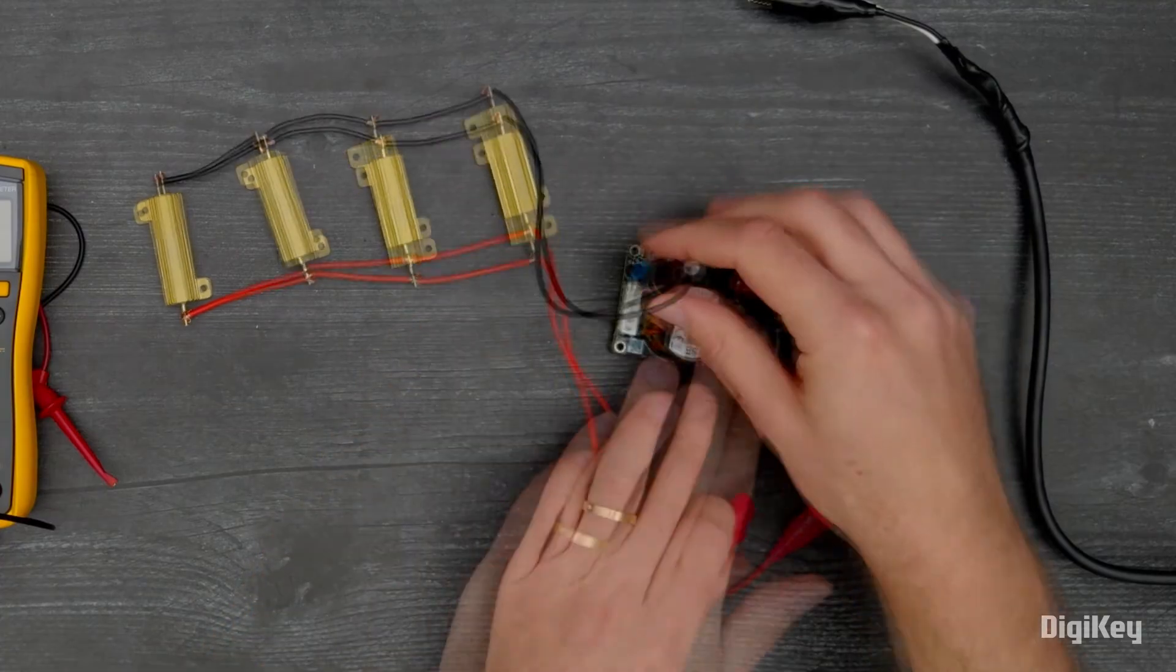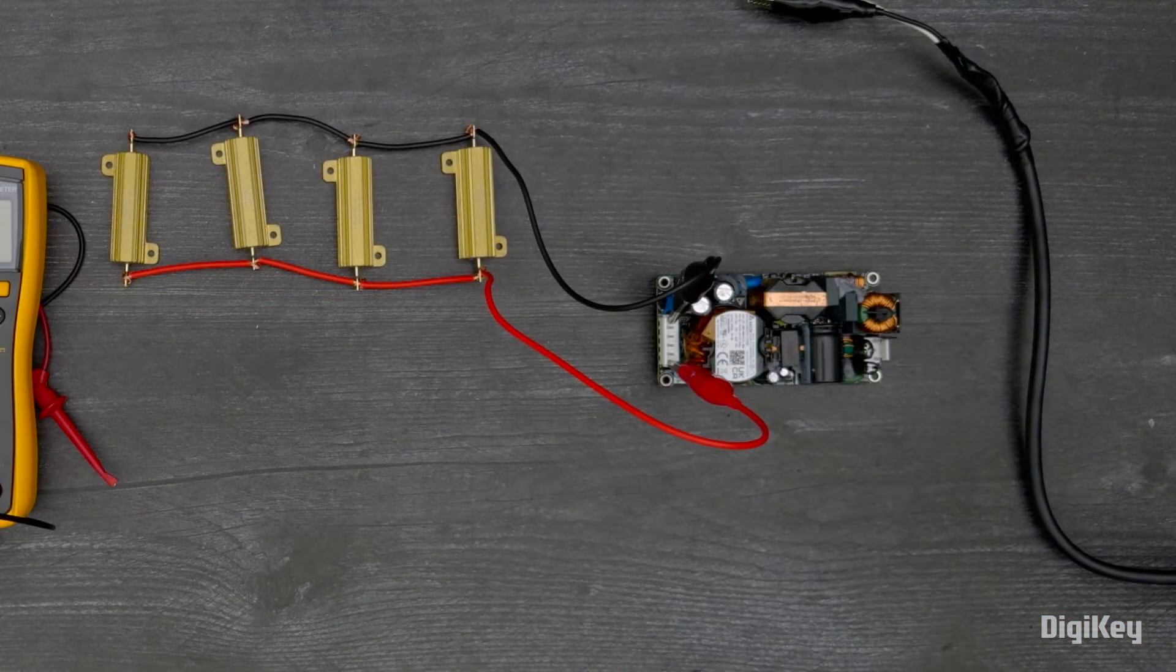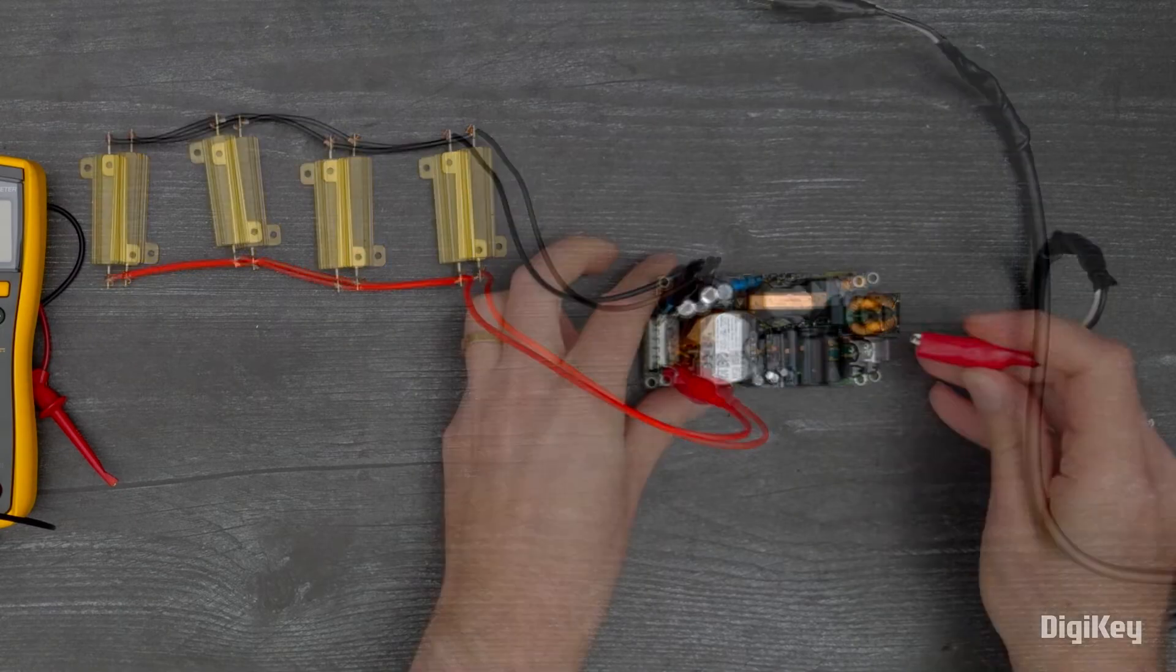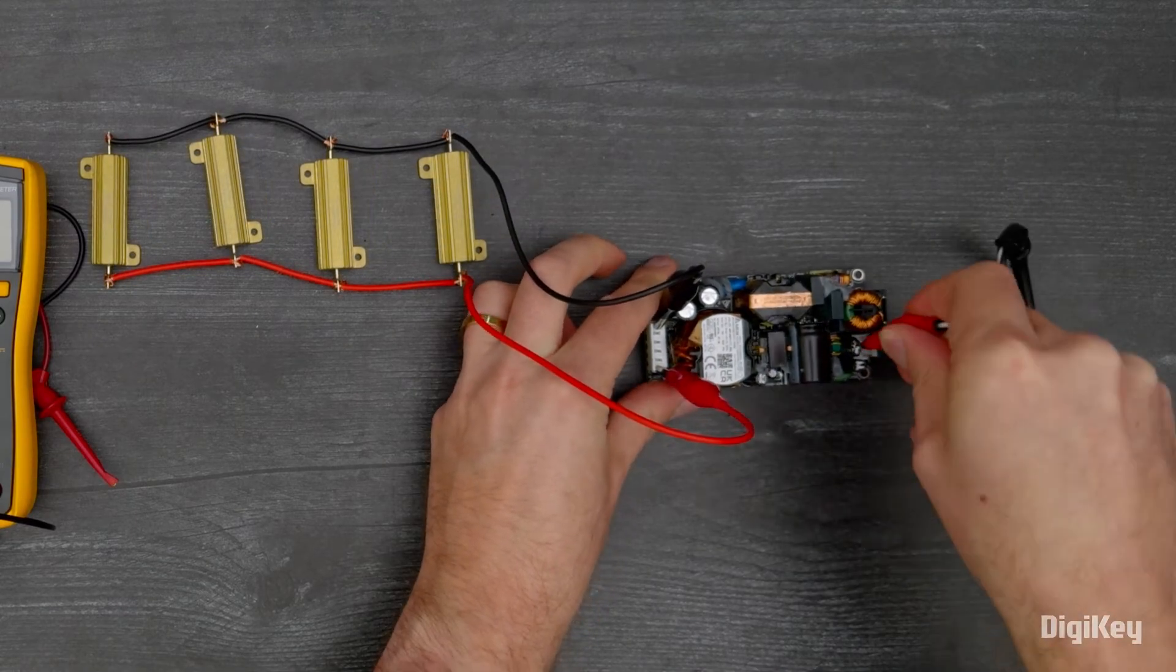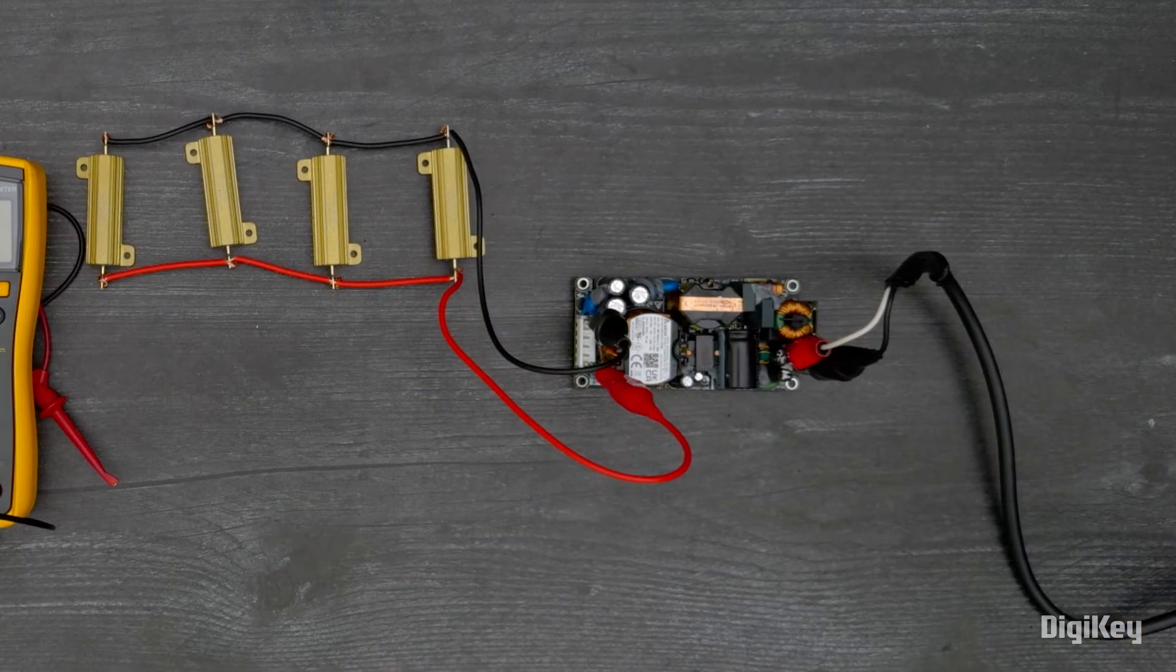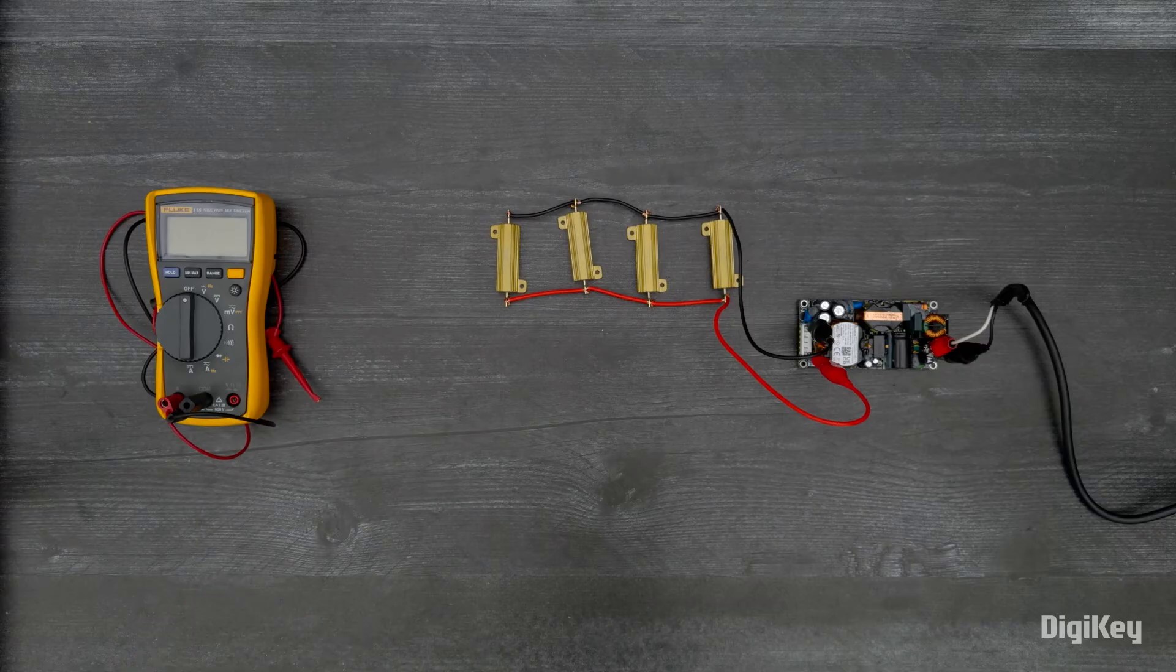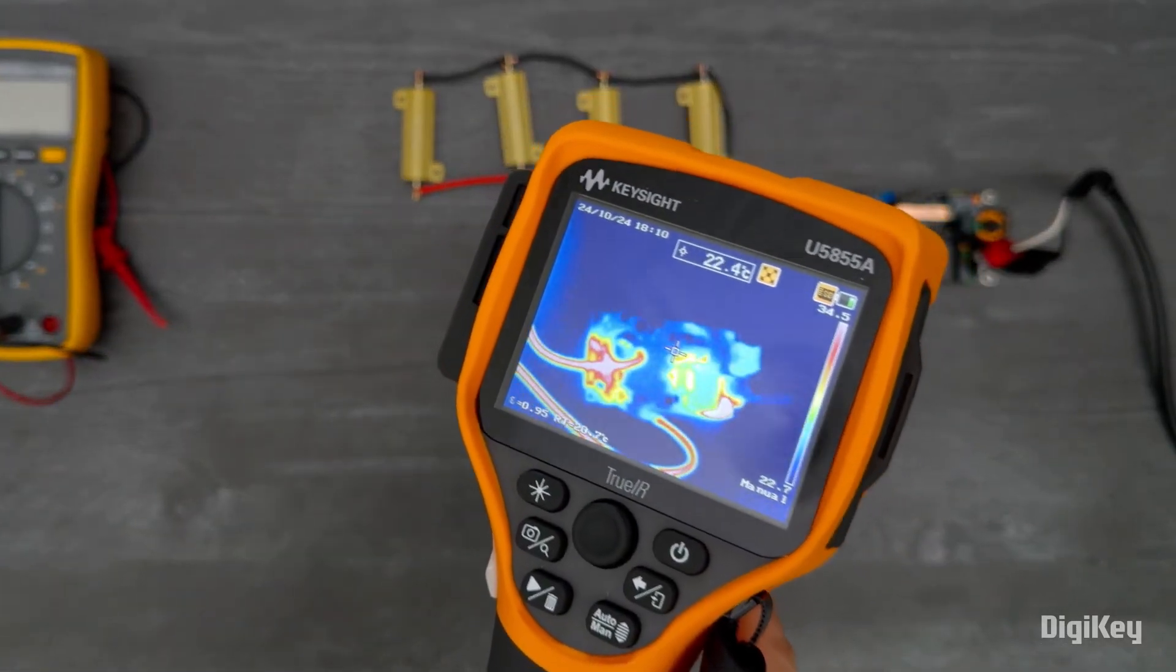First, we're going to connect our load to pins one and four on the output connector. Then with power off, connect a 120 volt input to pins one and two on the input connector. Now turn on the input supply and observe the power supply efficiency with thermal imaging.